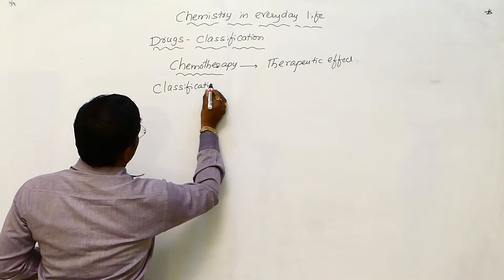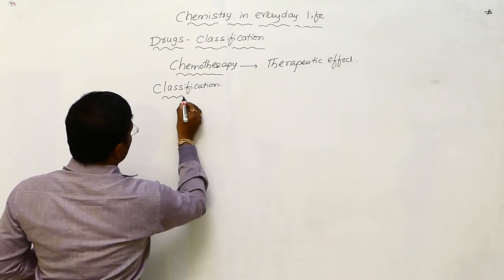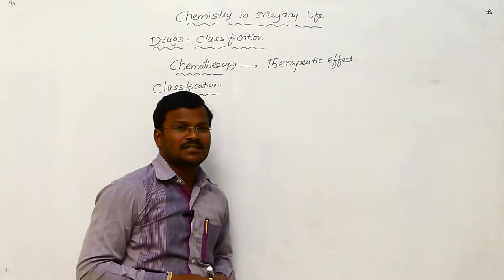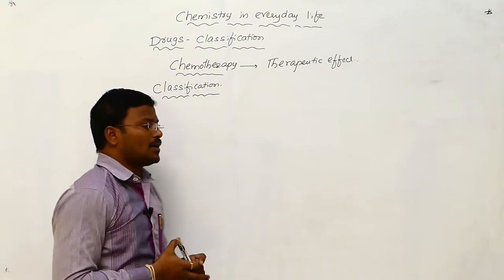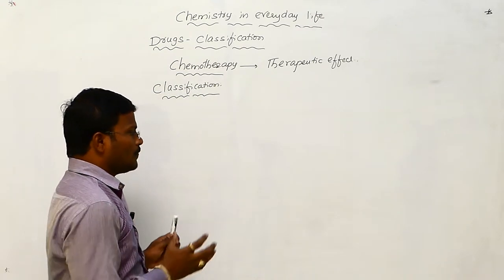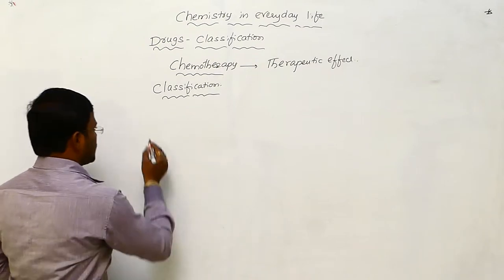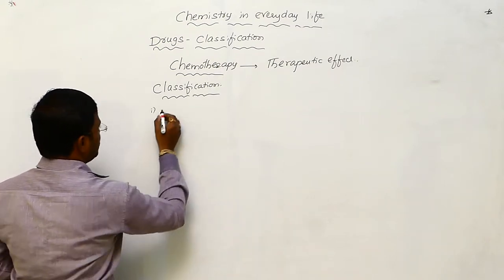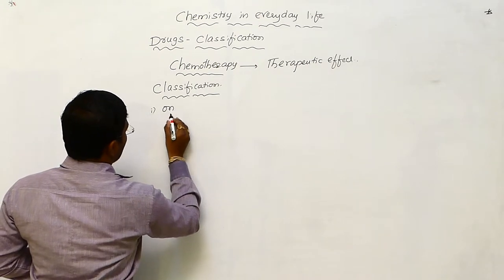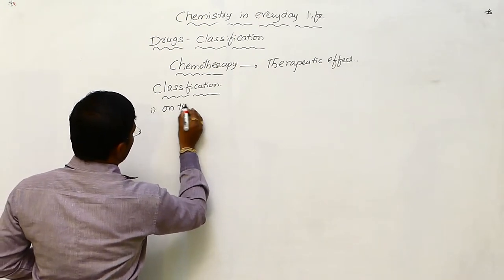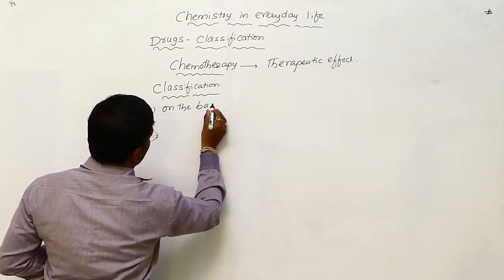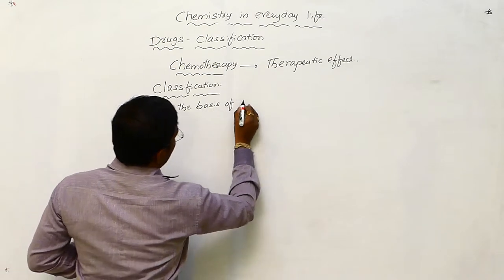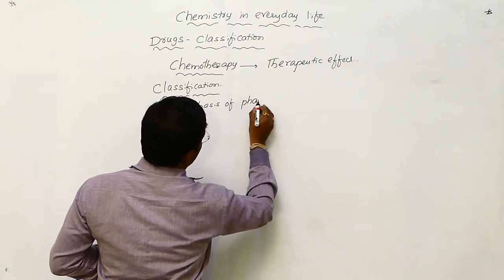Now let us come to the classification of drugs. Different criteria are considered for the classification of drugs, and we are going to discuss a few of them. The first type of classification is classification of drugs on the basis of pharmacological activity.